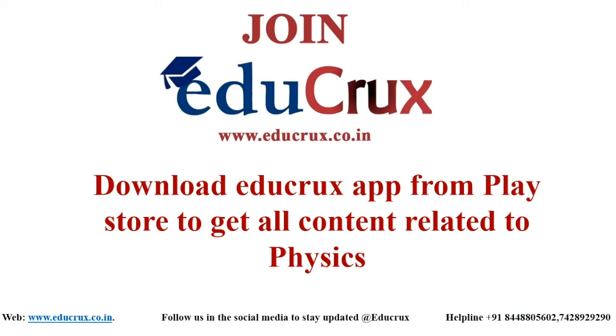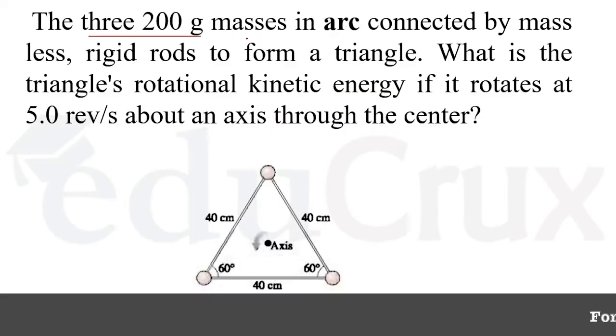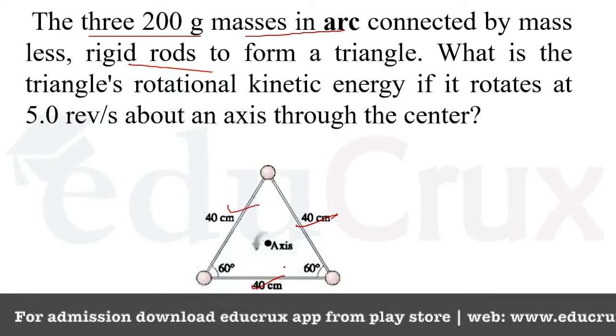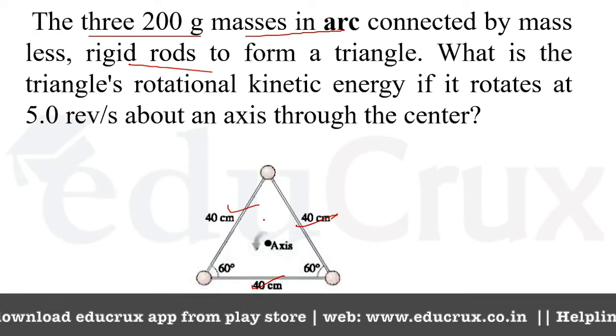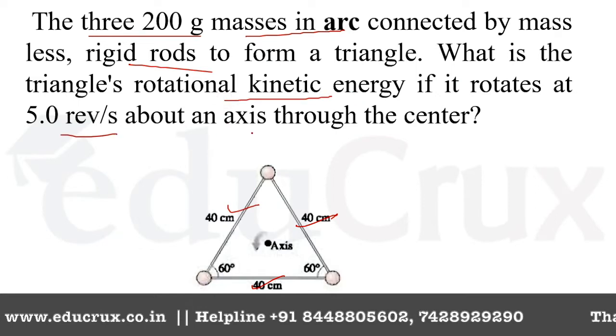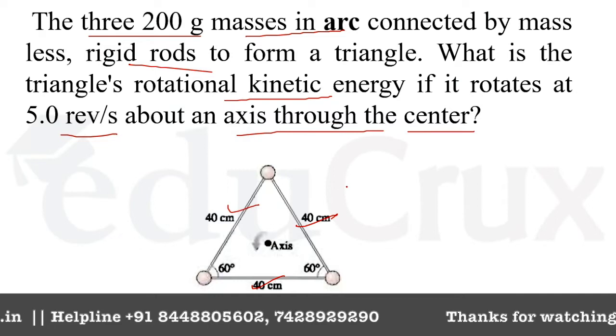Hello everyone, my name is Saloni and today we'll discuss a question that will be helpful for all physics competitive exams. Our question says three 200 gram masses are connected by massless rigid rods to form a triangle. What is the triangle's rotational kinetic energy if it rotates at 5 revolutions per second about an axis through the center?